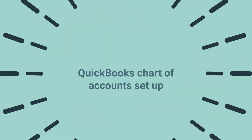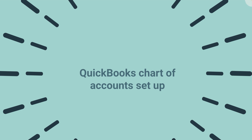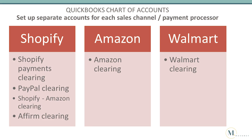Let's talk about the QuickBooks Online chart of accounts setup. In order to properly account for and reconcile each clearing account, you'll need to set up a separate account category for each sales channel and payment processor. For Shopify, you'll set up Shopify payments clearing and separate clearing accounts for each payment processor, such as PayPal, Amazon, Affirm, and others. For Amazon, set up an Amazon clearing account. For Walmart, set up a Walmart clearing account.